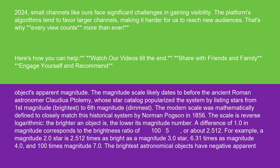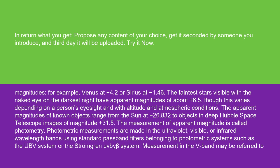The modern scale was mathematically defined to closely match this historical system by Norman Pogson in 1856. The scale is reverse logarithmic: the brighter an object is, the lower its magnitude number. A difference of 1.0 in magnitude corresponds to the brightness ratio of 10^(1/5) or about 2.512. For example, a magnitude 2.0 star is 2.512 times as bright as a magnitude 3.0 star, 6.31 times as magnitude 4.0, and 100 times magnitude 7.0. The brightest astronomical objects have negative apparent magnitudes.